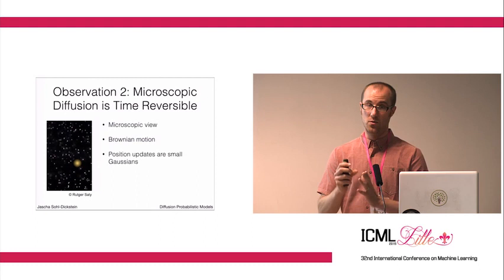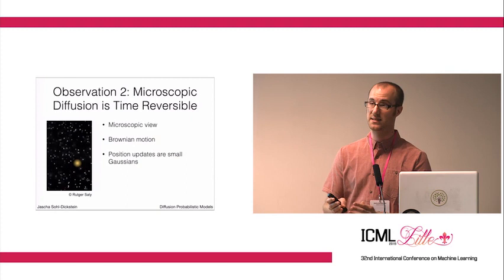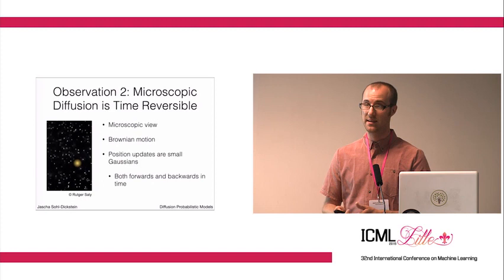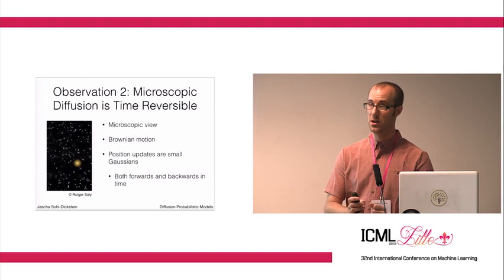And for very small diffusion steps, the functional form for the reverse process is identical in that the reverse trajectory also consists of drawing a Gaussian with some mean and some small covariance close to your original data point.